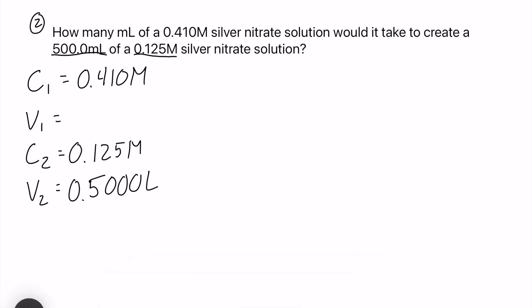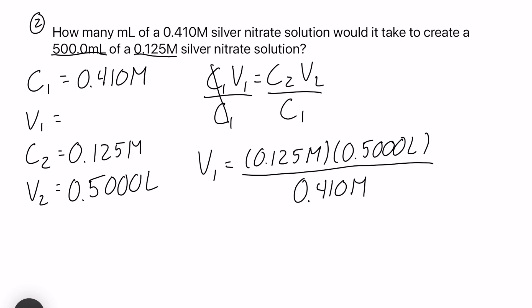So therefore we have to be solving for V1. So let's set this up. We have C1 V1 equals C2 V2. We are going to isolate V1 so let's divide the left side by C1 as well as the right. Therefore we'll have V1 equals 0.125 molar multiplied by 0.5000 liters and that is all over our C1 which is 0.410 molar.